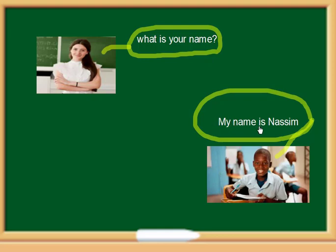The pupil answers: My name is Naseem. This is a teacher. This is a pupil. The teacher asks the pupil about his name, so she says: What is your name? The pupil answers: My name is Naseem.